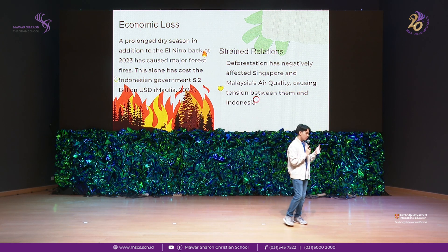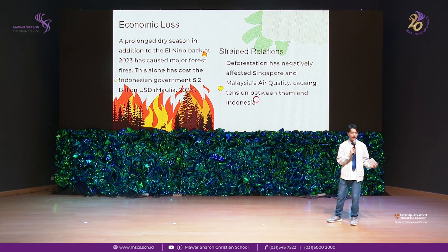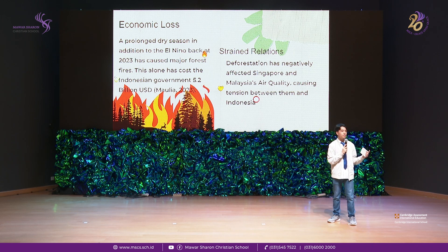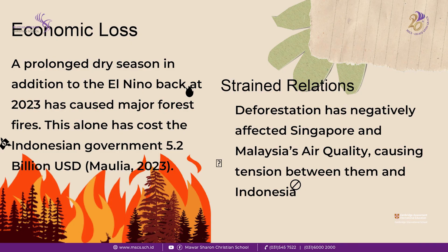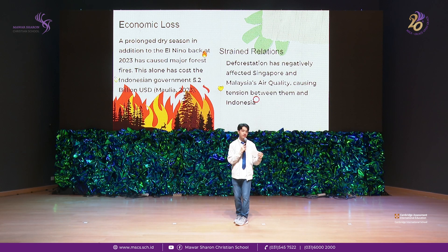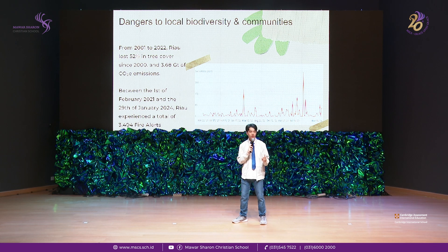Now moving on to the consequences. First is economic loss. Last year there was a prolonged dry season, an El Niño event, and extensive deforestation in Riau. Combined, these factors caused major forest fires that cost the Indonesian government 5.2 billion USD. The second consequence is strained relations — the hazes caused by the fires created tension between the governments of Indonesia, Malaysia, and Singapore due to the negative impact on air quality.